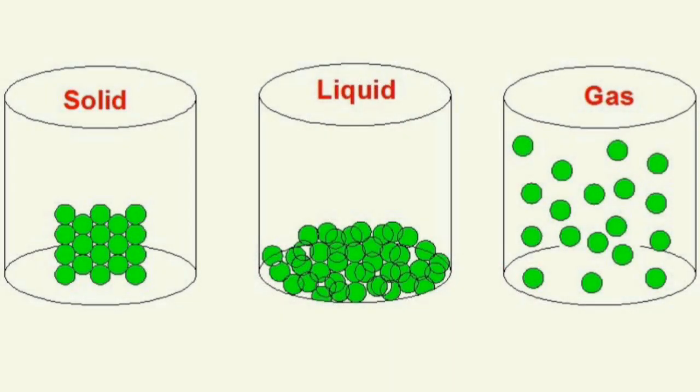Now I will show you a clearer illustration of the particles of the three states of matter so you can easily recognize the difference among the three. Particles in the solid state are compressed — they are tightly packed. However, in the liquid state of matter, you will notice that even though the particles are close to one another, they are loosely packed.